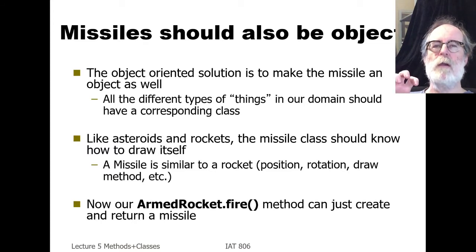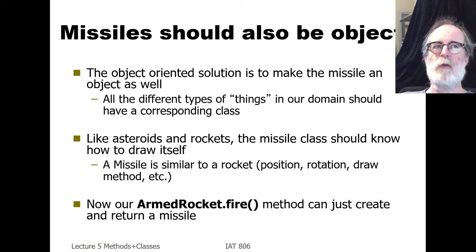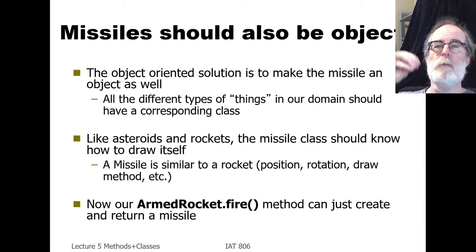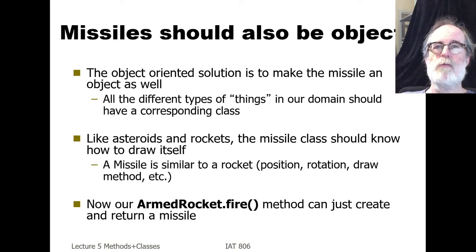The reason we're constructing a missile is that missiles should also be objects. The object-oriented solution is to make things in the virtual world correspond to software things. A missile — a bullet flying around — is a thing, and it ought to have its own chunk of code with its own information. Like asteroids and rockets, the missile class should know how to draw itself. Our ArmedRocket fire method just creates and returns a missile to the draw function, and if the draw function has a missile, it just keeps drawing it.